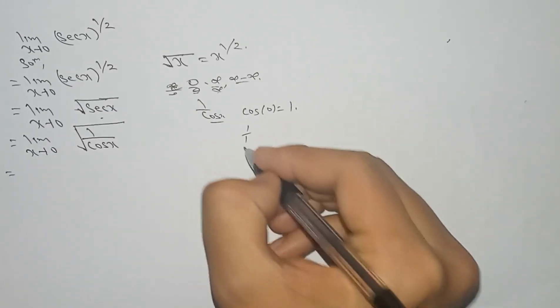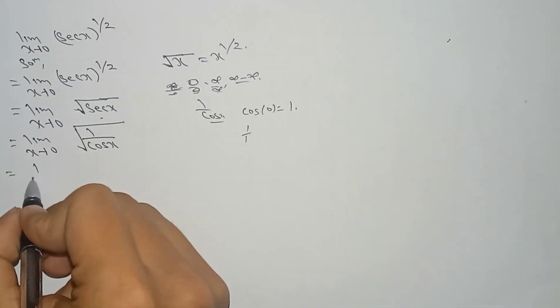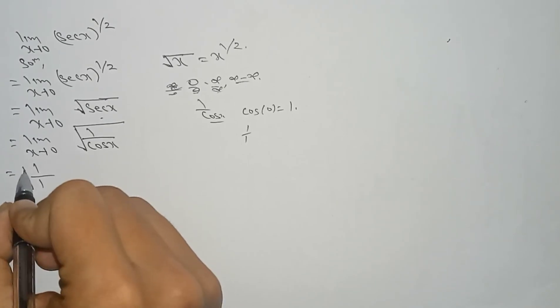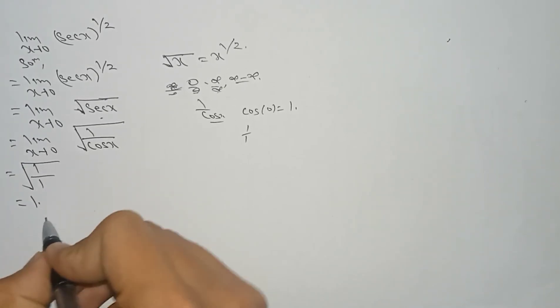If we put cos 0, it becomes 1 by 1. So 1 by 1 root under is equal to 1 - this is the required answer.